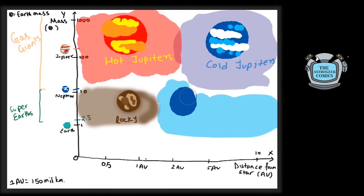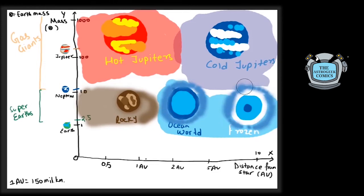Ocean worlds would be at an average distance from the star so that the water is in liquid form. If they are farther away, the water on the surface might be frozen. These would also have an atmosphere around them.